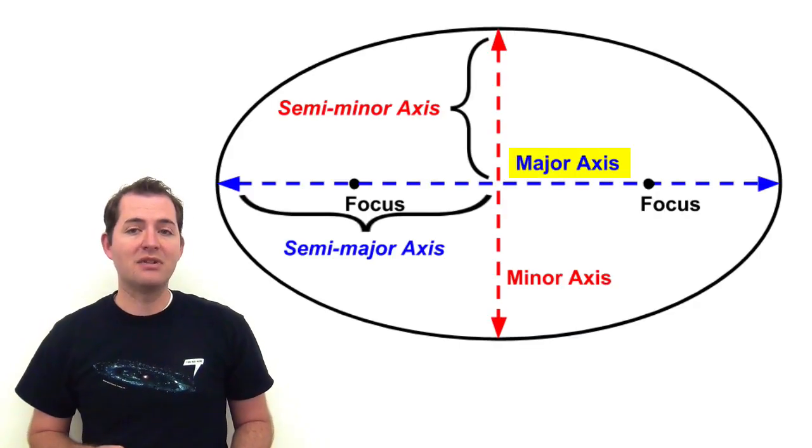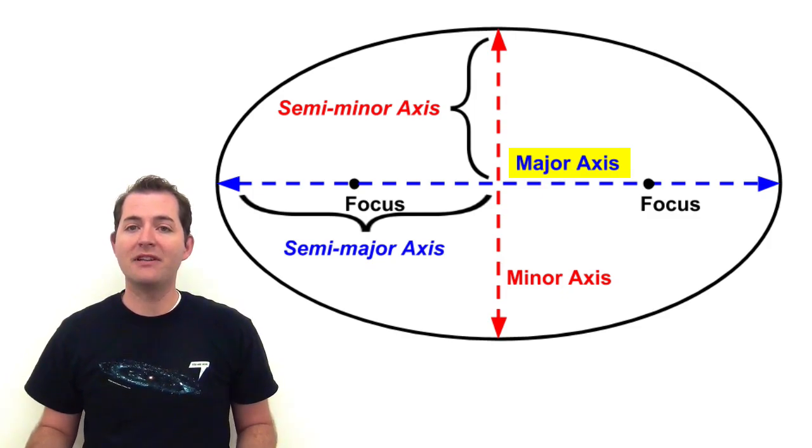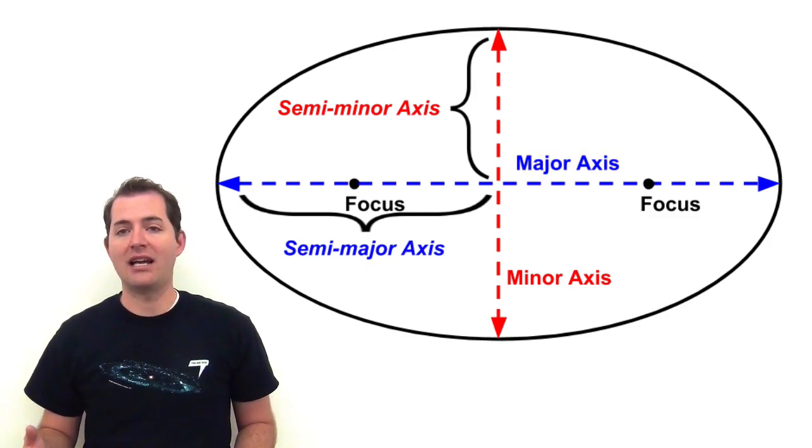There is the major axis which passes through the center of the ellipse and is the longest diameter of the ellipse. It's also called the transverse diameter.